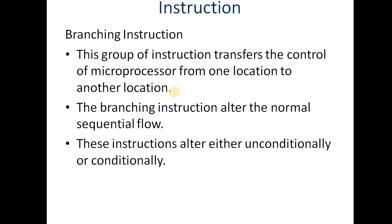The branching instruction alters the normal sequential flow. Branching instructions kya karte hain — hamaara ek normal sequential flow chal raha hota hai, instruction ko line by line execute karna hota hai. Uski jagah branching instructions aate hain aur uske normal sequential flow ko alter — matlab change — karte hain, ki ab hum line by line nahi jayenge aur hum kisi bhi line par switch ya jump karenge.